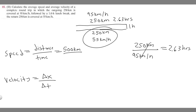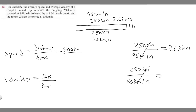Now let's do the return trip. It's the same approach: 250 kilometers divided by 55 kilometers per hour. The units cancel to give hours. 250 divided by 55 equals 4.545, which we'll round to 4.55 hours.